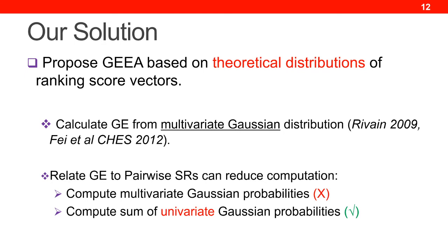Motivated by the absence of an efficient and accurate multi-byte GE estimation method, in this work we propose a new GE estimation algorithm, GEA, to fill this gap. Instead of averaging over actual ranks, the GEA algorithm provides fast and accurate GE estimation based on theoretical distributions of the ranking score vectors. This idea is inspired by the theoretical multivariate Gaussian distribution discovered in the previous literature. We will further discuss how we utilize the relationship of GE with pairwise success rates to reduce the GE calculation from multivariate Gaussian probabilities to the sum of univariate Gaussian probabilities, allowing us to accurately estimate GE within practical computational time.